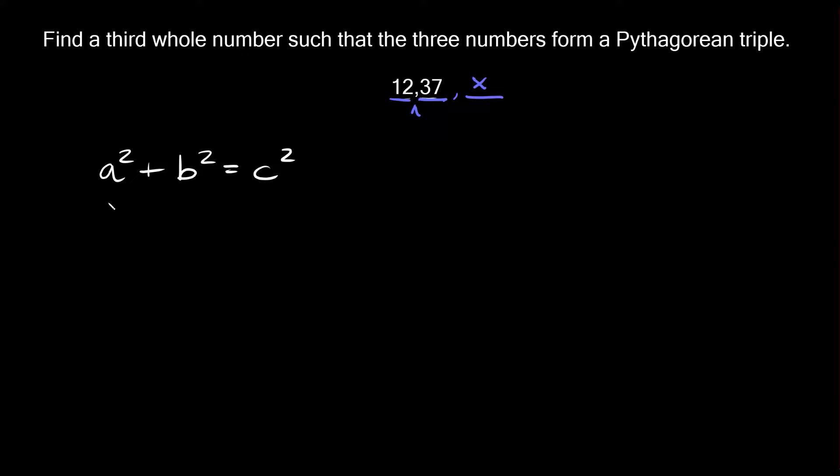Let's just assume that 12 and 37 are the two shorter sides and maybe the missing side is the hypotenuse.